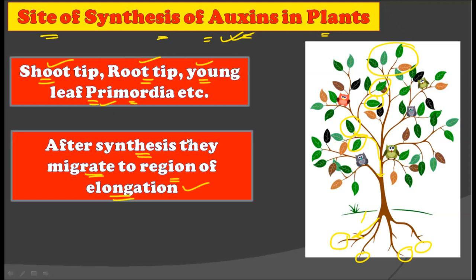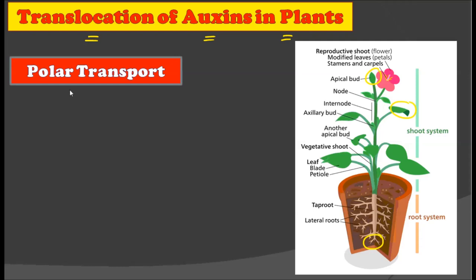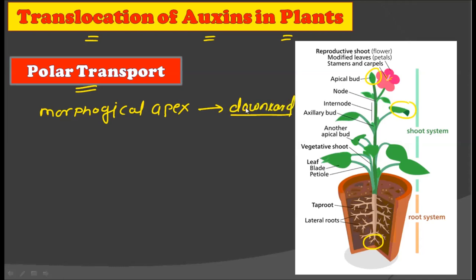Now let us see how translocation of auxins takes place in plants. Auxins are synthesized at the shoot tip, root tip, and young leaf primordia, and from these areas they must translocate to different parts of the plant body to perform their function. The mechanism of transport of auxin is called polar transport, which means translocation of auxin from the morphological apex in a downward direction.